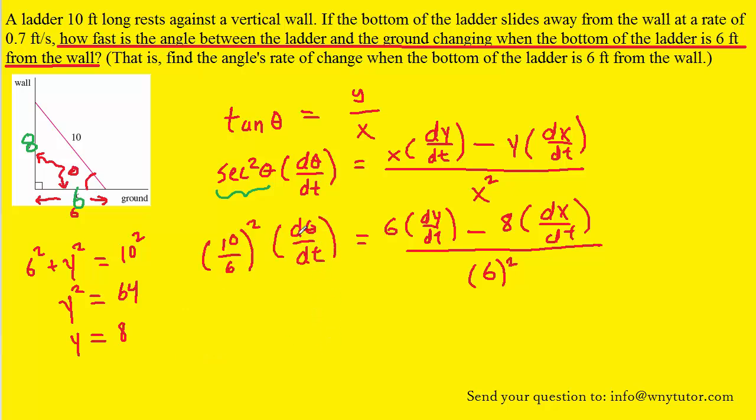We have our equation we're trying to find d theta dt but we still have these terms over here that we haven't filled in yet. So that's our next step. dx dt shouldn't be too hard to figure out and that's going to be based on what they said here. They said the bottom of the ladder is sliding away from the wall at a rate of 0.7 feet per second.